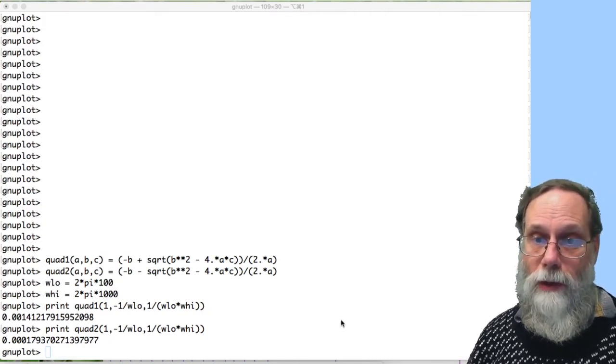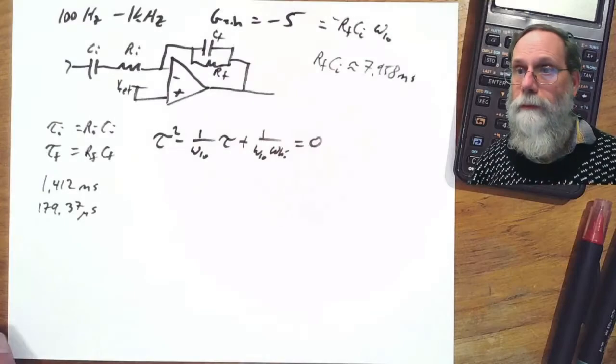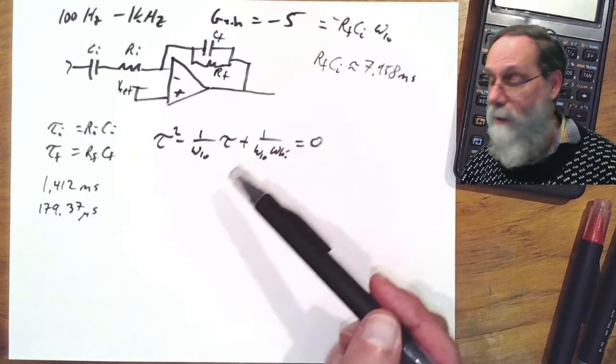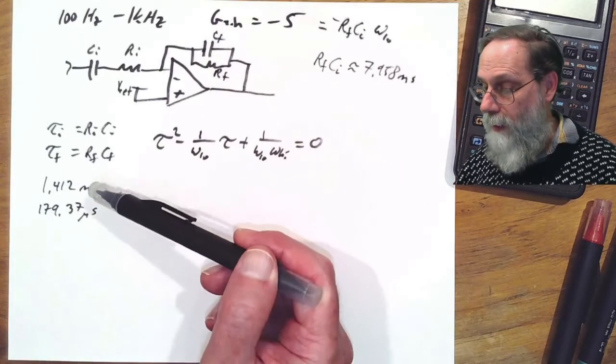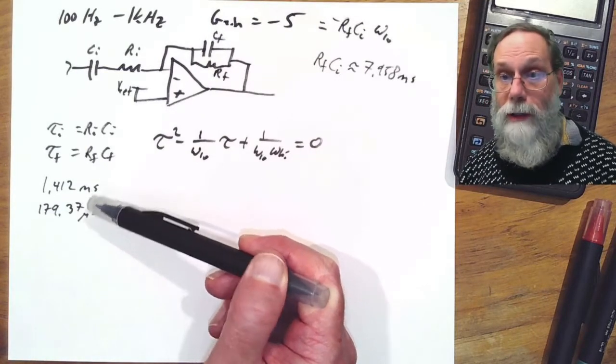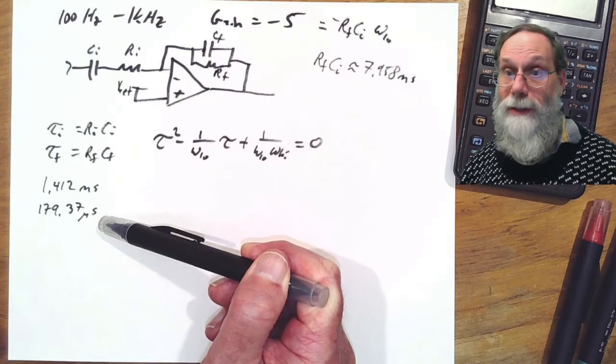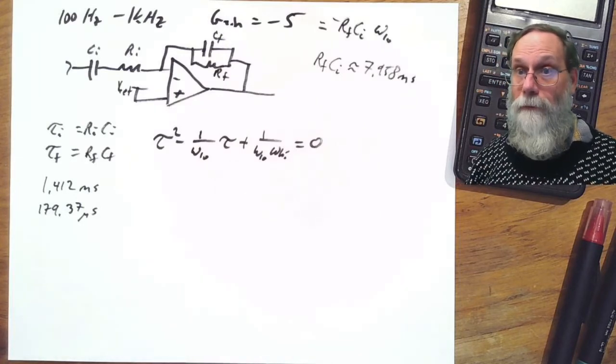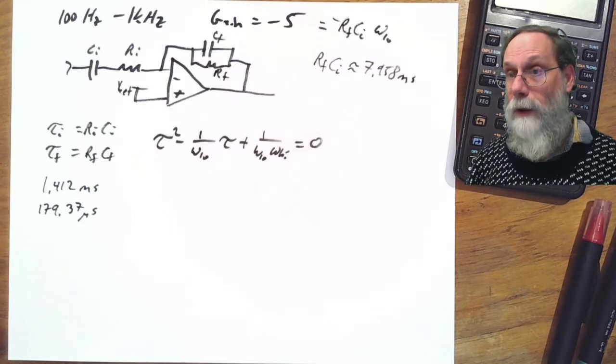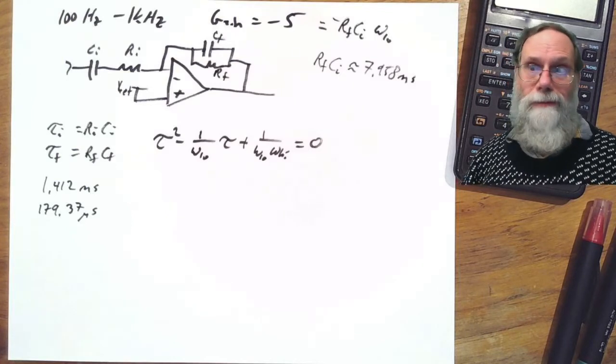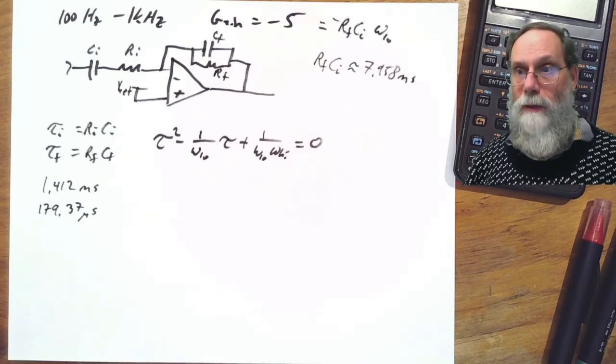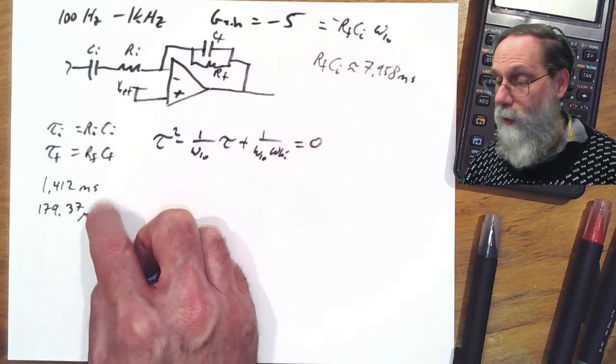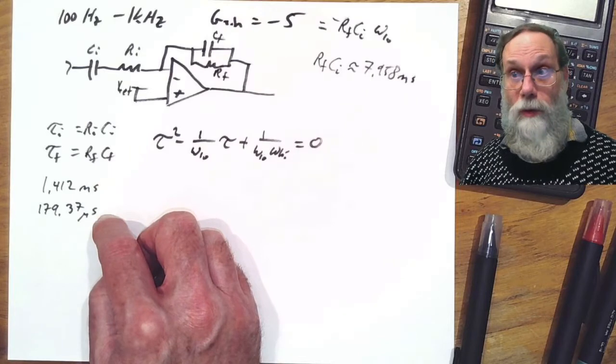I've got three time constants, 7.958 milliseconds for rfci, and then 1.412 milliseconds and 179.37 microseconds. I've got four values, rf, cf, ri, ci, and only three equations. So I've got some arbitrary choice to make. And then I'll also have to make a choice of which one of these is associated with i and which one's with f.